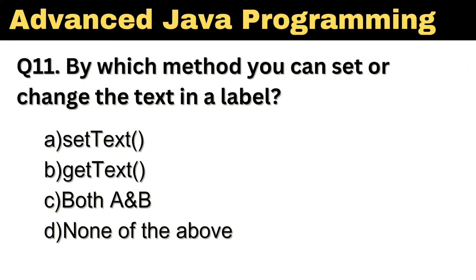Question number 11: By which method can you set or change the text in a label? The right answer is Option A: setText.